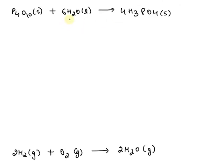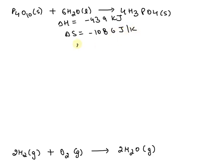Hello students, let's begin with this question. So here this reaction is given and some values are provided. The delta H for this reaction is equals to minus 439 kilojoule. The delta S is given which is equals to minus 1086 joule per kelvin.